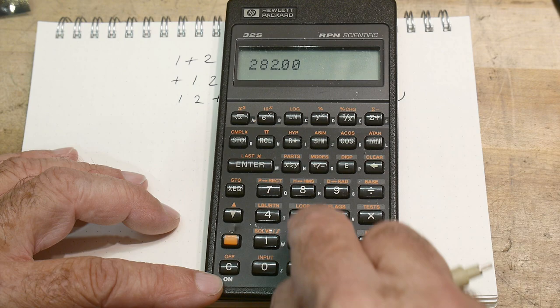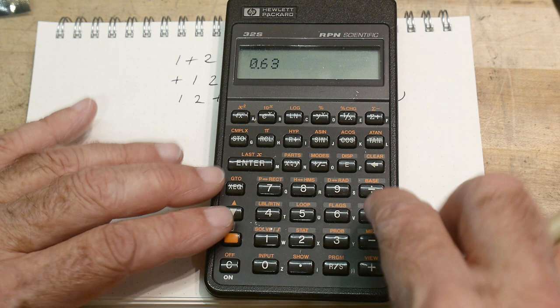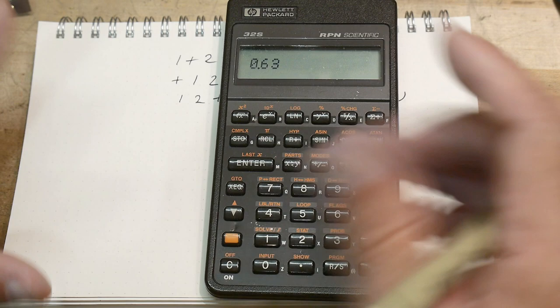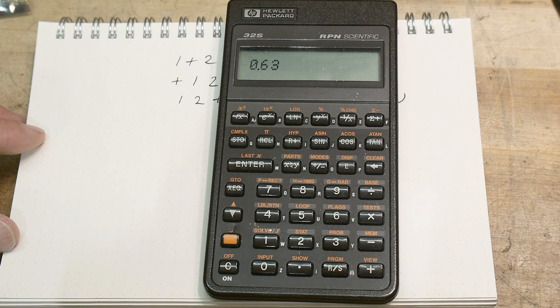Or 5, enter, 8, divide. So the operator always comes at the end. And that actually makes it easy to do a bunch of calculations in a string. So there are a lot of big fanboys of RPN.